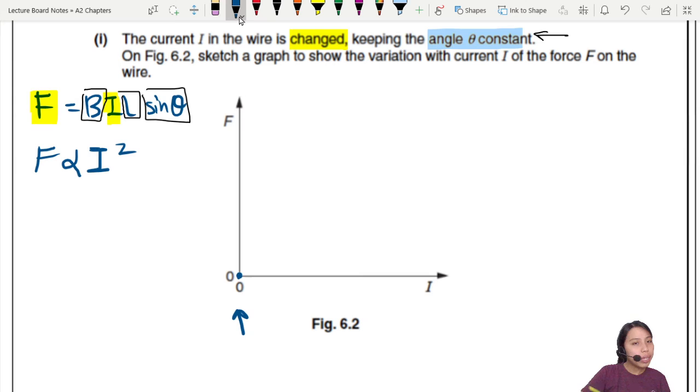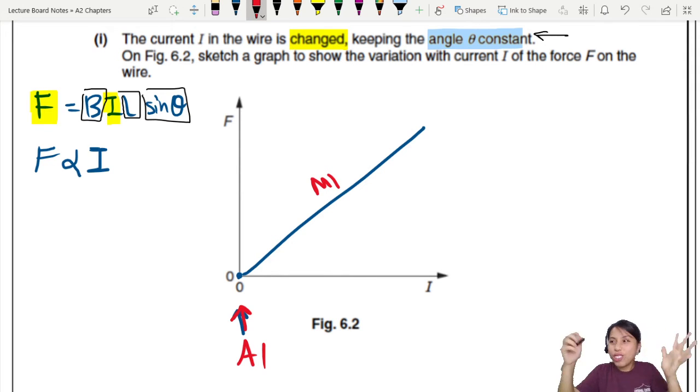F proportional to I, not I squared, not square root. Straight line. So you just draw a nice straight line graph. Two marks. First mark if you draw a straight line. If your starting point is at the origin, that's another mark. Two marks for drawing a straight line graph.